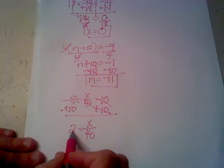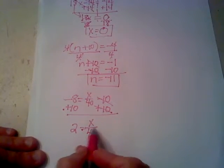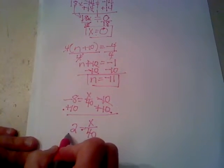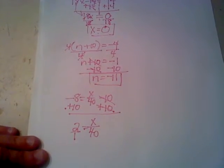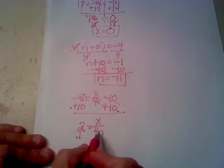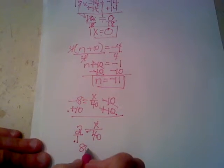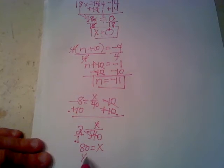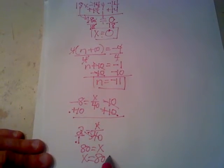Now I've got 2 equals x divided by 40. Now a proportion like this, the easiest way to do it is to write a 1 under your whole number and then do a cross product. So 2 times 40 is 80, and x times 1 equals x. So x equals 80.